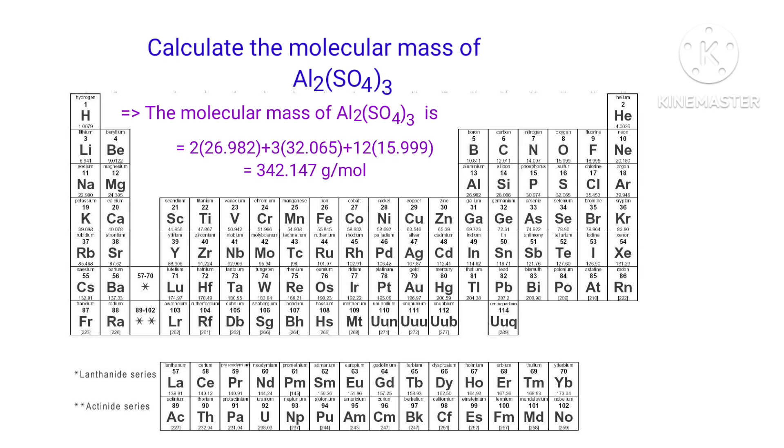So the molecular mass of Al2(SO4)3 is 2×26.982 + 3×32.065 + 12×15.999, which equals 342.147 grams per mole.